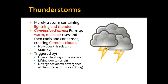Thunderstorms can also form via low pressure formed by divergence aloft, which produces convergence at the surface. And finally, thunderstorms are very common and can form easily ahead of fronts, specifically cold fronts. These four triggers should sound pretty familiar — those are the same processes we talked about for how air can rise from the surface creating clouds and rainfall. If the atmosphere is really unstable, any one of these can quickly turn a sunny day into a severe thunderstorm outbreak.